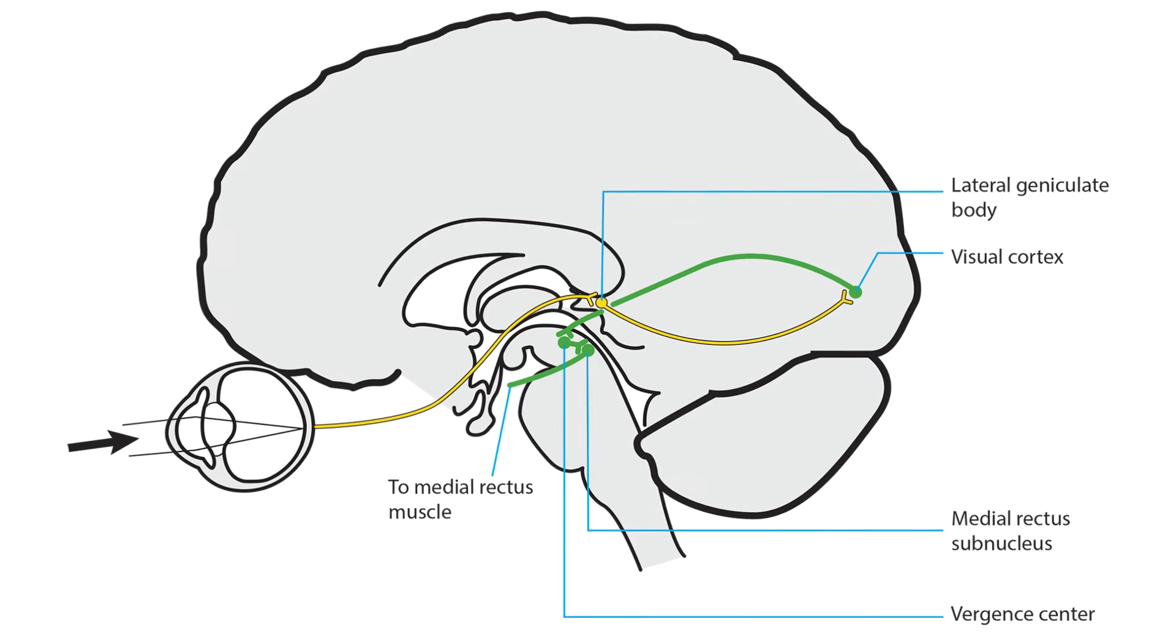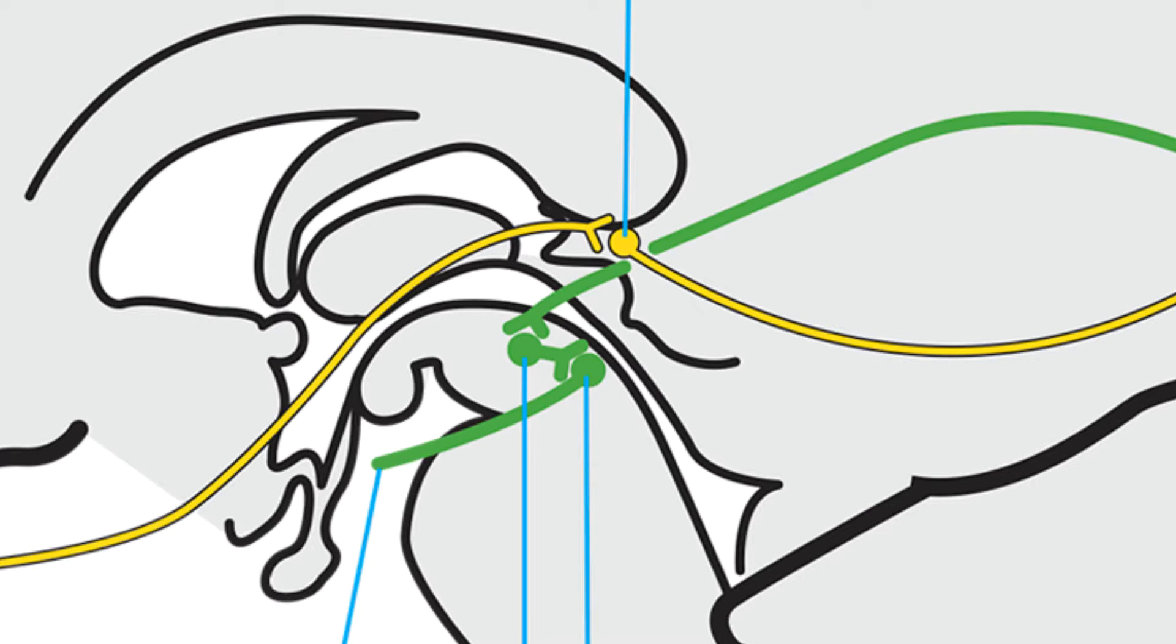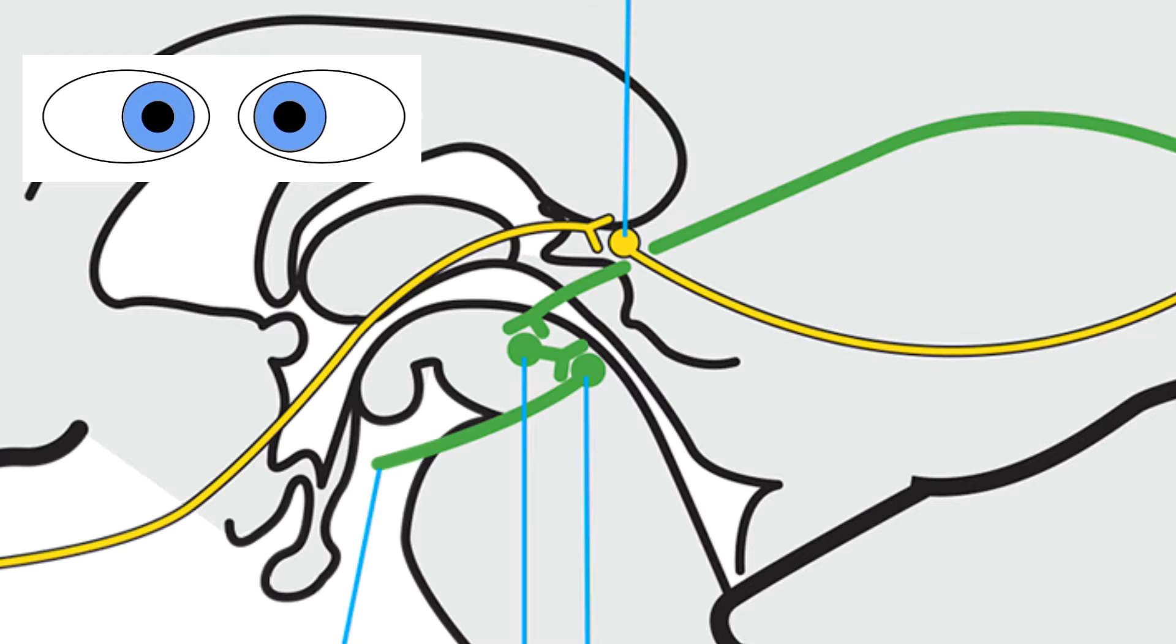The visual cortex sends a signal to tegmental midbrain convergence centers located near the medial rectus subnuclei. Those nuclei stimulate the eyes to converge.